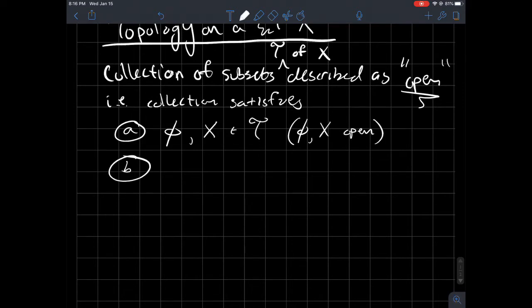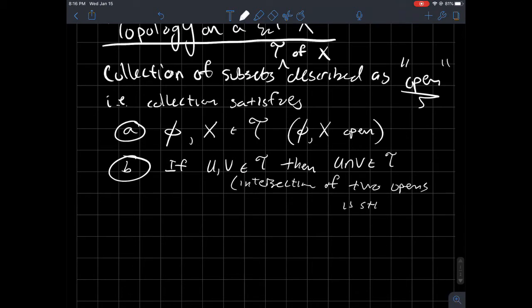The second thing that we need to have happen is that if you have two things that are in T in your collection here. So if U and V are both in T, then their intersection has to be in T also. And so what does that say? That says that the intersection of two opens is open. So the intersection of two opens is still open.